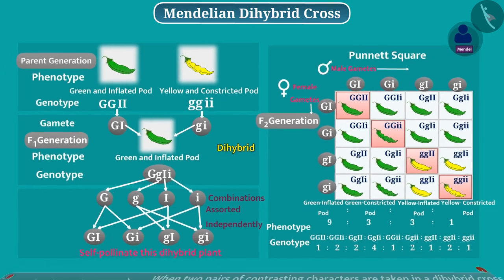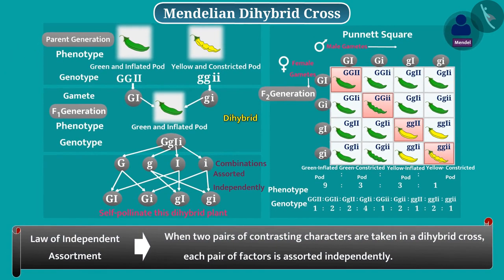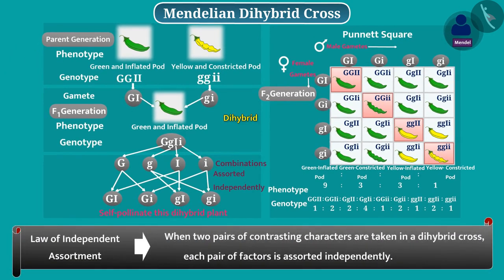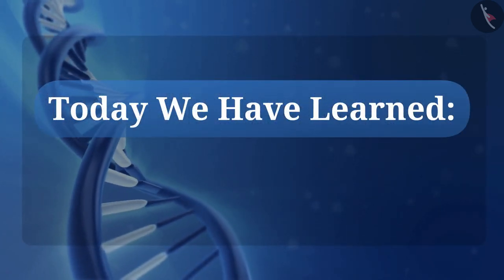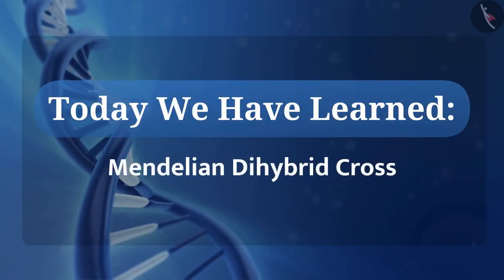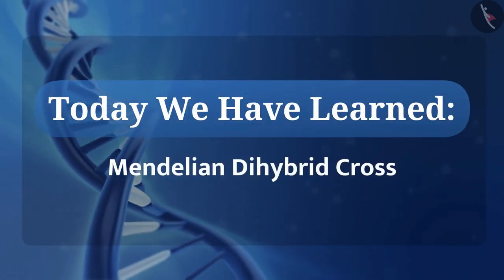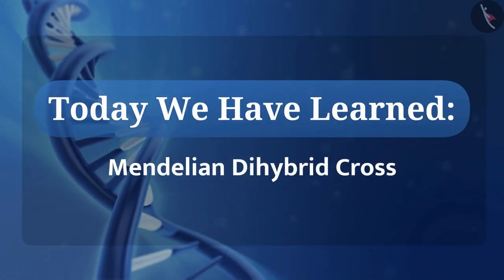Now you must have understood the law of independent assortment of inheritance. Today, we have learned about the Mendelian dihybrid cross.